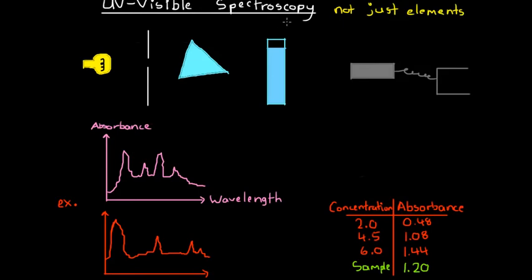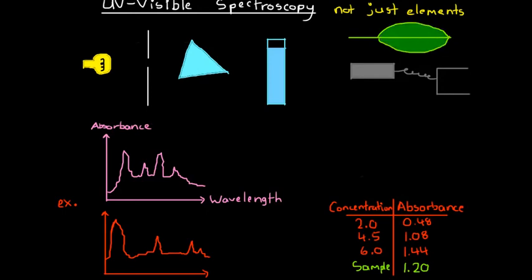Before we start understanding how the process works, we need to understand a little bit about how light and colour work. If we've got a simple leaf off a tree, obviously this leaf is green. Why does this leaf look green? Well, basically what we're seeing is the green light that is reflected by the leaf. The leaf itself absorbs all other colours of light besides green, and reflects the green light, so we see only the light that it reflects.